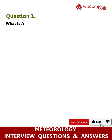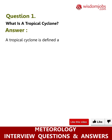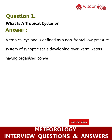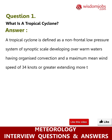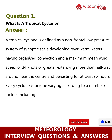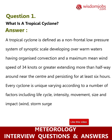Question 1: What is a tropical cyclone? A tropical cyclone is defined as a non-frontal low-pressure system of synoptic scale, developing over warm waters, having organized convection and a maximum mean wind speed of 34 knots or greater, extending more than halfway around near the center, and persisting for at least six hours. Every cyclone is unique, varying according to a number of factors including life cycle, intensity, movement, size, and impact — wind, storm surge, and flooding.